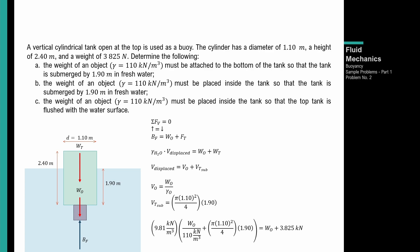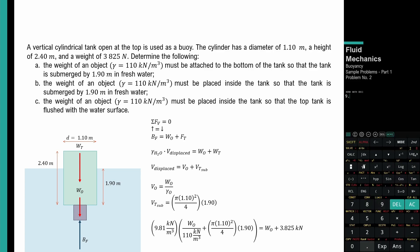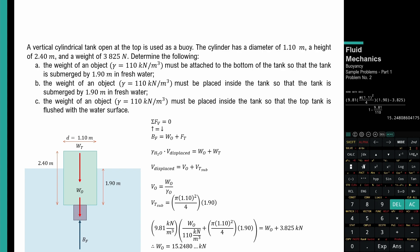Equal sa weight ng object plus yung given na weight ng tank which is 3.825 kilonewtons. Ang gagawin: lahat ng constants sa isang side, tapos yung mga may variable na w_o sa isang side, tapos divide both sides dun sa coefficient ng w_o para makuha yung weight ng object. So: 9.81 × π × (1.10)² / 4 × 1.90 minus 3.825, over 1 minus 9.81/110. Therefore, weight ng object sa configuration na ito ay 15.2480 kilonewtons.